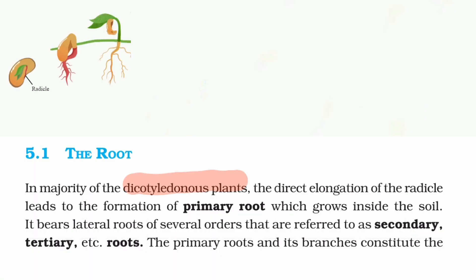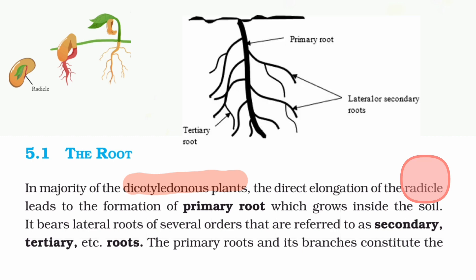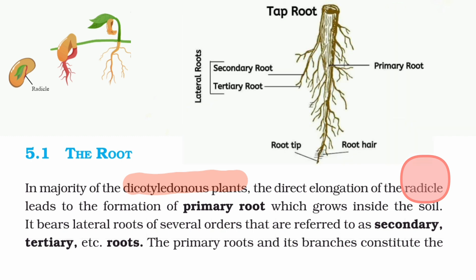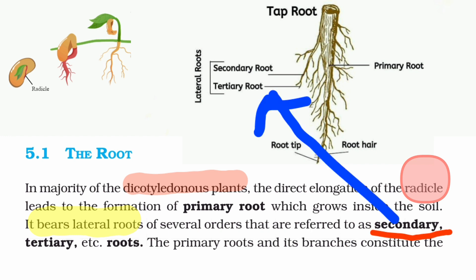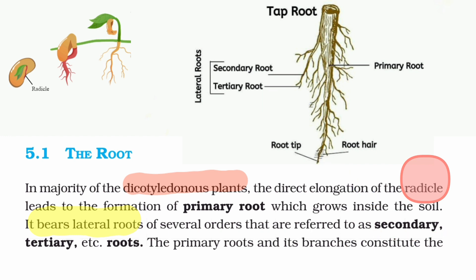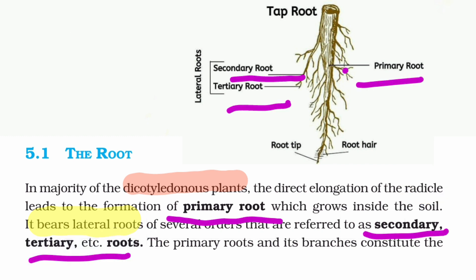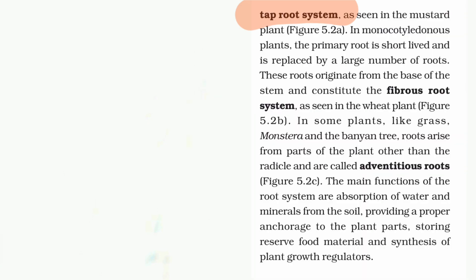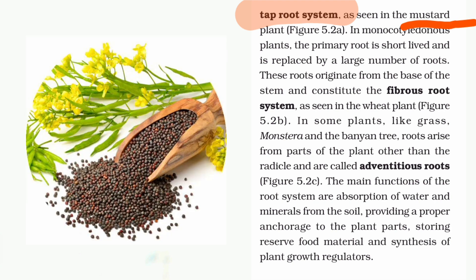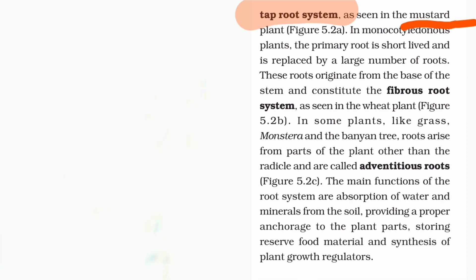Two root types: dicot and monocot. The radicle forms the primary root, and from it grow lateral roots, also called secondary roots, then tertiary roots. This primary, secondary, tertiary root system is called the tap root system — for example, mustard is a dicot plant with a tap root system.